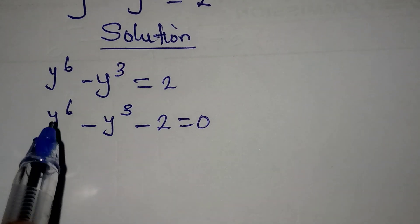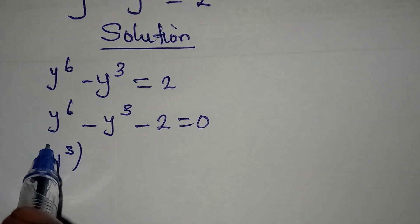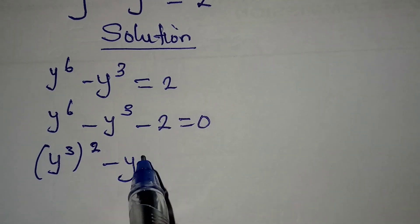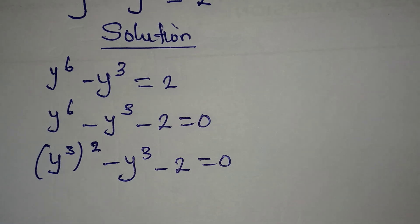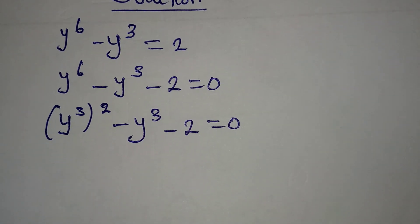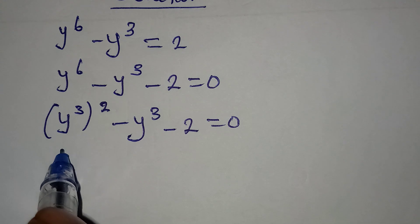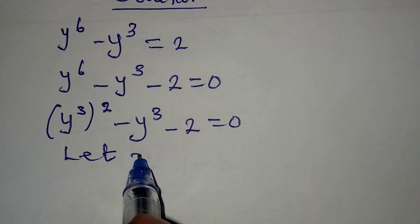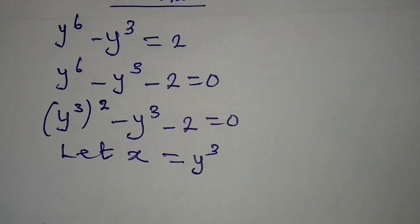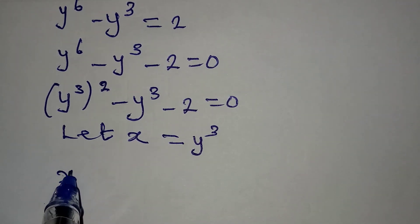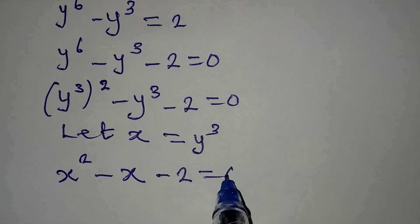What do I do from here? Remember that y to the power of 6 is the same thing as y to the power of 3, to the power of 2. Then I have y to the power of 3 minus 2 equal to 0. We are going to let a letter x be equal to y to the power of 3. And if I do that, it means I will have x squared minus x minus 2 equal to 0.